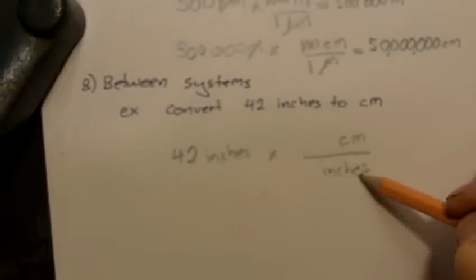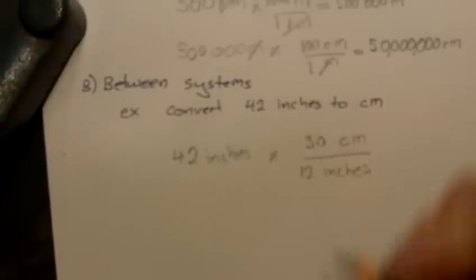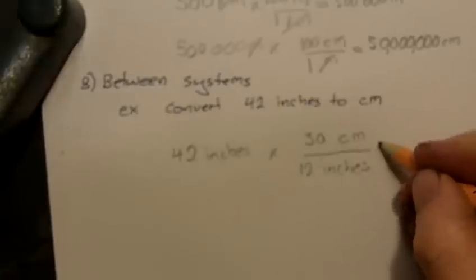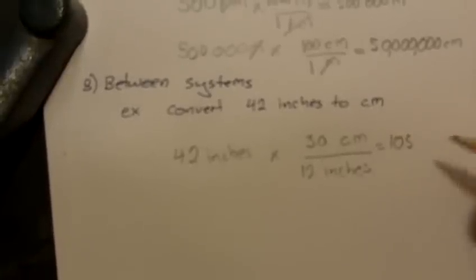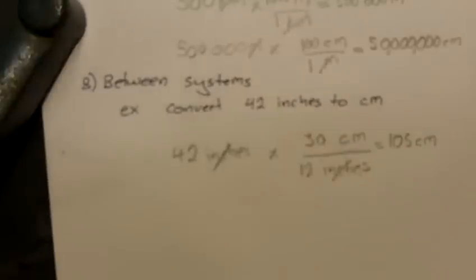Just by looking at a ruler, you can see that there's 30 centimeters in 12 inches. So this winds up being 42 times 30 divided by 12. It comes out to 105 centimeters, with our inches canceled off.